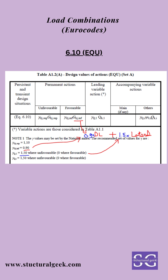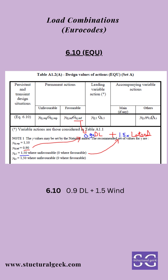The very first is the EQ610 equilibrium combination, which is 0.9 times dead load plus 1.5 times the lateral load. The lateral load is the one which is destabilizing the building, so it could be from wind load, seismic actions, or any other lateral load. To arrive at the load combination factors, I have used the table below, which shows the 0.9 factor for gamma G superior and 1.5 for gamma Q1 in the unfavorable case. A typical example of the EQ610 combination is 0.9 times dead load plus 1.5 times wind load.